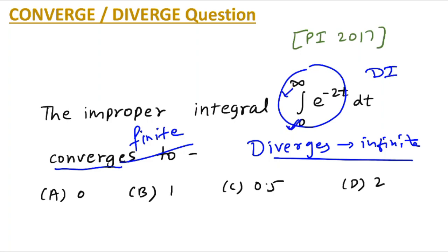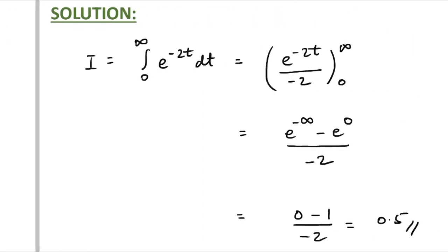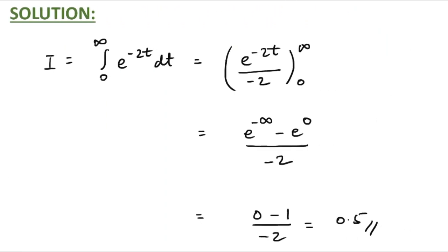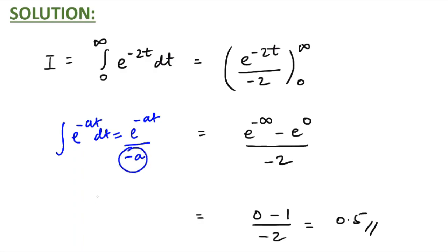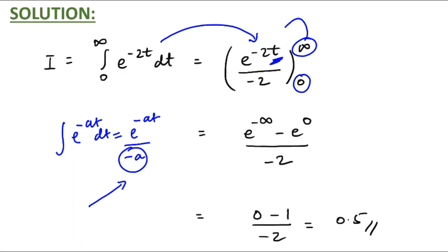The limits are 0 to infinity, so this is a definite integral, and we can solve this integration very simply. The integral of e raised to minus at dt is e raised to minus at upon minus a, because in integration the coefficients are divided — whereas in differentiation they are multiplied. Using the same concept, you can see the simplification, and because we are dealing with definite integrals we have to take care of limits.